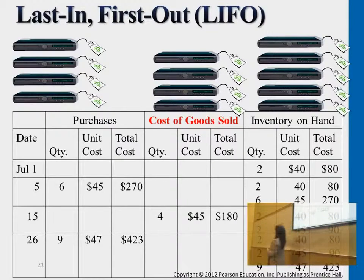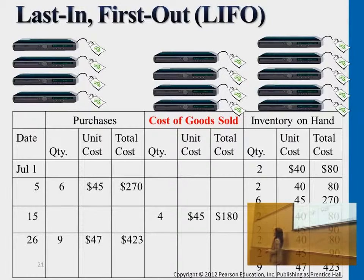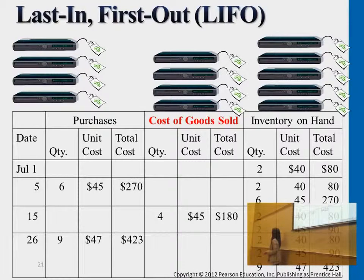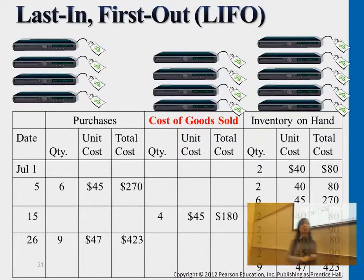Going back to this: total inventory that you purchased is either shifted to customers' hands or it stays in the warehouse. Whichever method you use, the total amount is always the same. This is what we call total cost available for sale.